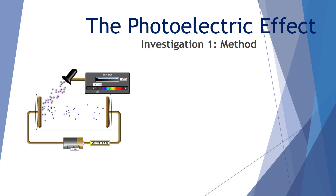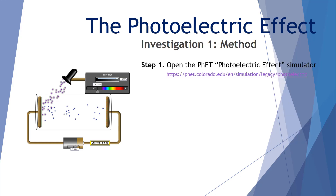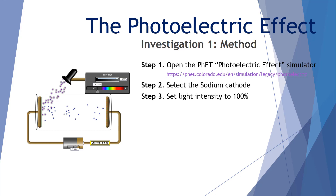Let's have a look at the method for this investigation. Step one: we're using the PhET photoelectric effect simulator — there's our link. You'll need to access that particular simulator to carry this investigation out. Step two: select the sodium cathode. Step three: set light intensity to 100%. Step four: set the wavelength to 240 nanometers.